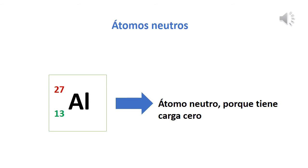Los átomos neutros son todos aquellos átomos que tienen la misma cantidad de cargas positivas que negativas, es decir, que no han ganado ni perdido electrones. Tienen igual cantidad de protones y electrones. Por lo tanto, todos los que estén en la tabla periódica son átomos neutros, por ejemplo el sodio, el litio, el oxígeno, el hidrógeno. De esta manera se representa un átomo neutro, como el aluminio, porque no tiene ninguna carga.